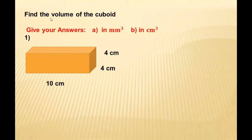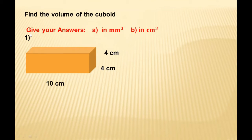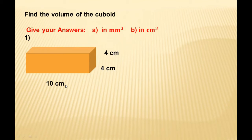A cuboid is a three-dimensional shape with length, width, and height. The first step is to check the units — are all the units the same? Here you can see 4 cm, 4 cm, and 10 cm — all are the same units, so you can proceed.